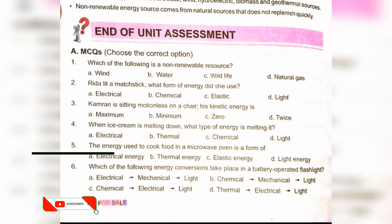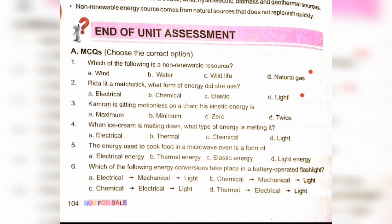Unit 8 Energy. Which of the following is a non-renewable resource? Option D: natural gas. When lighting a match stick, what form of energy is used? Light energy. Kamran is sitting motionless on a chair — his kinetic energy is option C: zero.